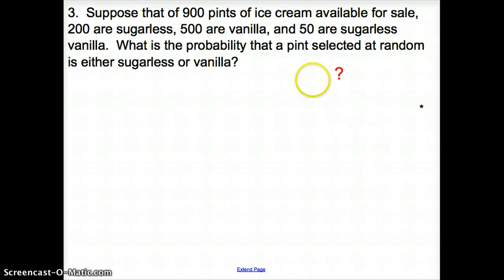Next, suppose that you have 900 pints of ice cream available for sale, 200 are sugarless, 500 are vanilla, and 50 are sugarless vanilla. What is the probability that the pint selected at random is either sugarless or vanilla? Well, sugarless or vanilla. Look at here, we have sugarless and vanilla that are the same kind. So is it going to be mutually exclusive or not mutually exclusive? It is not mutually exclusive because we are counting same things twice.